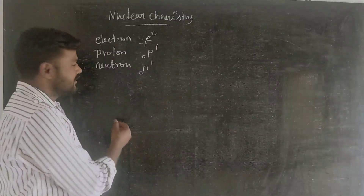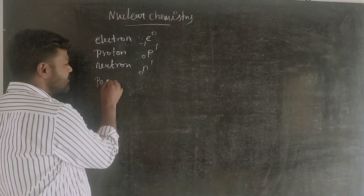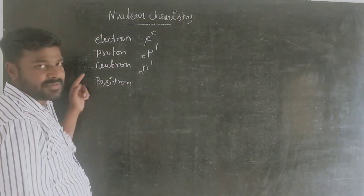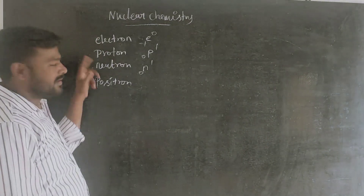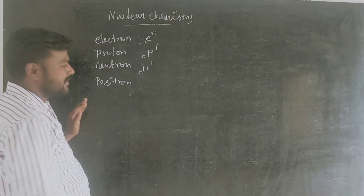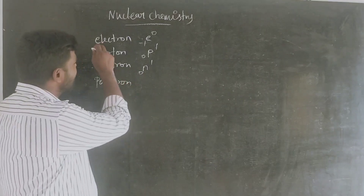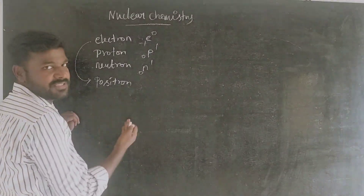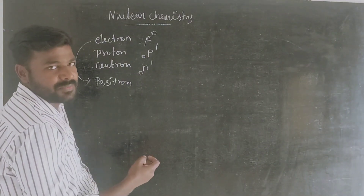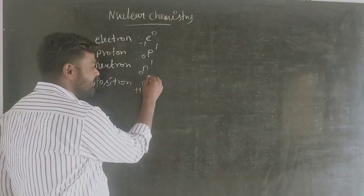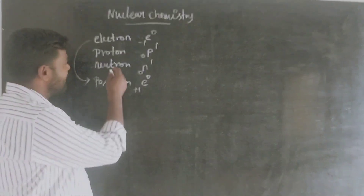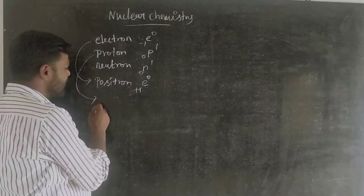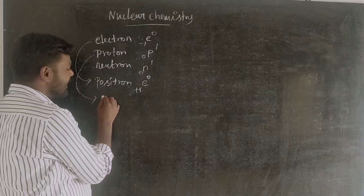Let's look at the positron. The positive electron is a positron. If you look at the difference between the electron and the positron, they are of opposite charge. The electron and the positron have opposite charges. The positron is an anti-proton in this sense — the proton also carries opposite charge.